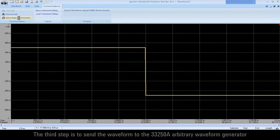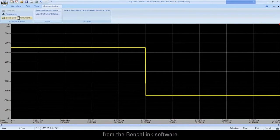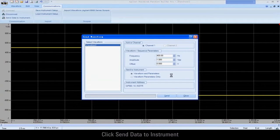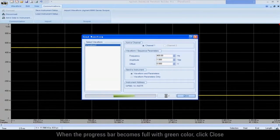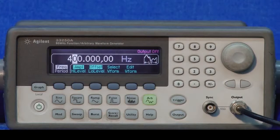The third step is to send the waveform to the 33250A arbitrary waveform generator from the BenchLink software. Click Send Data to Instrument. A Send waveform dialog window pops up. Click Send. When the progress bar becomes full with green color, click Close. Enable the 33250 output.